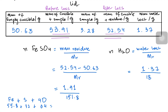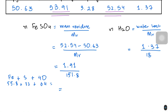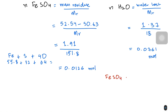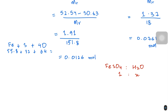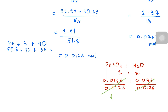The moles of the anhydrous residue turned out to be 0.0126 mol — remember to write values to three significant figures. The moles of water turned out to be 0.0761 mol. Since FeSO4 and water have a 1:x relationship, we take the ratio: 0.0761 / 0.0126 = 6.04, which gives a ratio of 1:6.